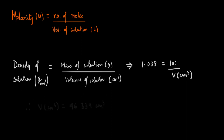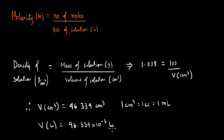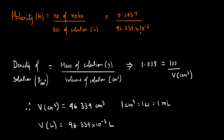Rearranging the density formula, the volume comes out to be 96.339 centimeter cube. For molarity, we need the volume in liters: since 1 cc equals 1 mL, the volume is 96.339 × 10⁻³ liters. Plugging in the number of moles and the volume, the molarity comes out to be 2.011 moles per liter.